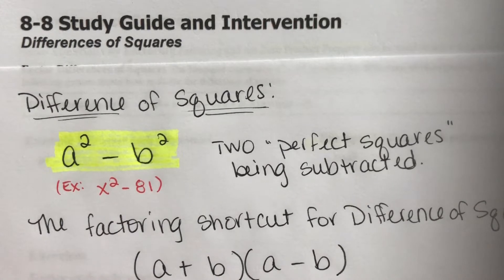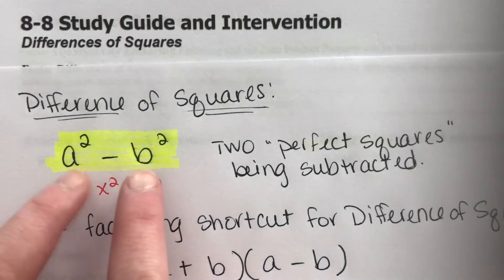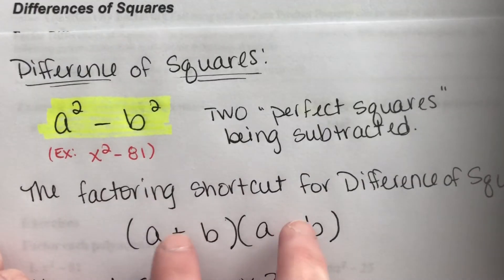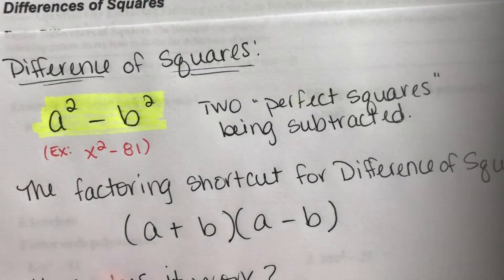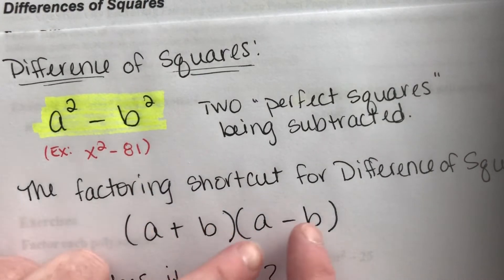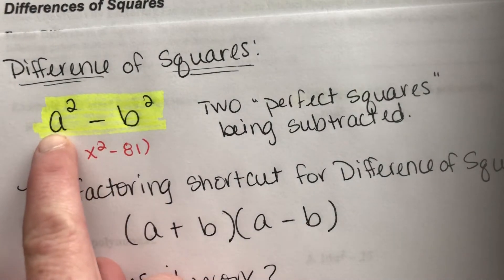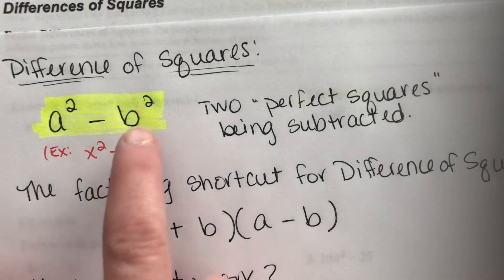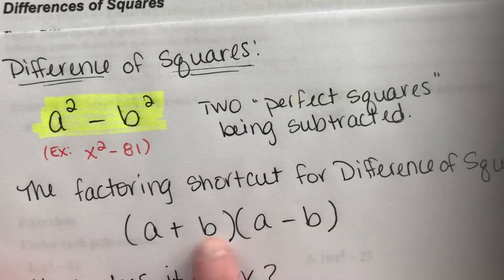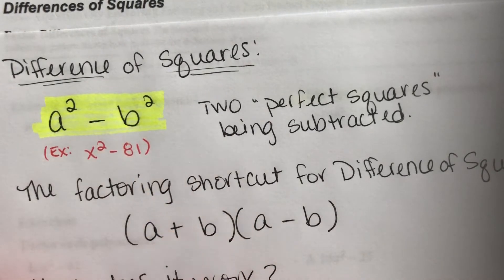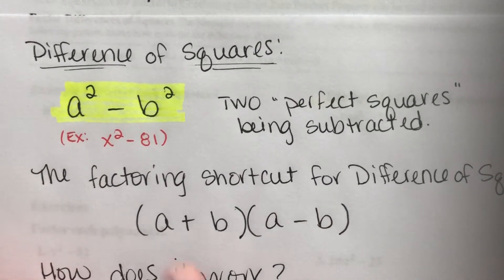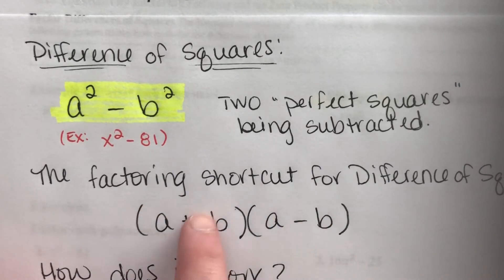When we factor the difference of squares, it is not a trinomial — it's a binomial — but there's a shortcut to factoring it. You're going to set up two binomials, just like when we factored a trinomial. To figure out what terms go in each binomial, take the square root of the first term — that's your first term in each binomial — and the square root of the second term as your second term. Since they both match, one binomial gets a plus sign and the other gets a minus sign. It doesn't matter which order.